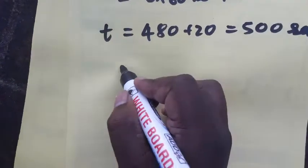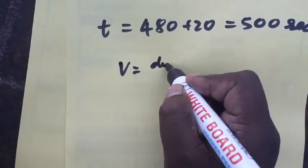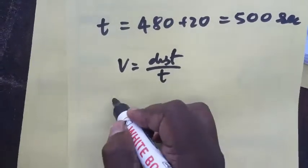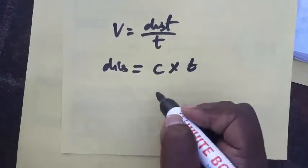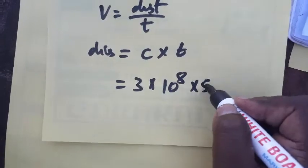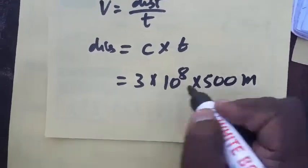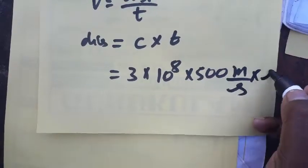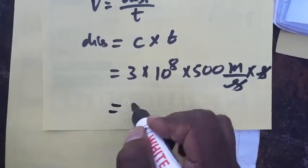That means velocity is equal to distance by time, so distance is equal to velocity into time. As we know, velocity of light is 3 into 10 power 8. The time we are taking is 500 seconds. Velocity's unit is meter per second into second, seconds cancel out.